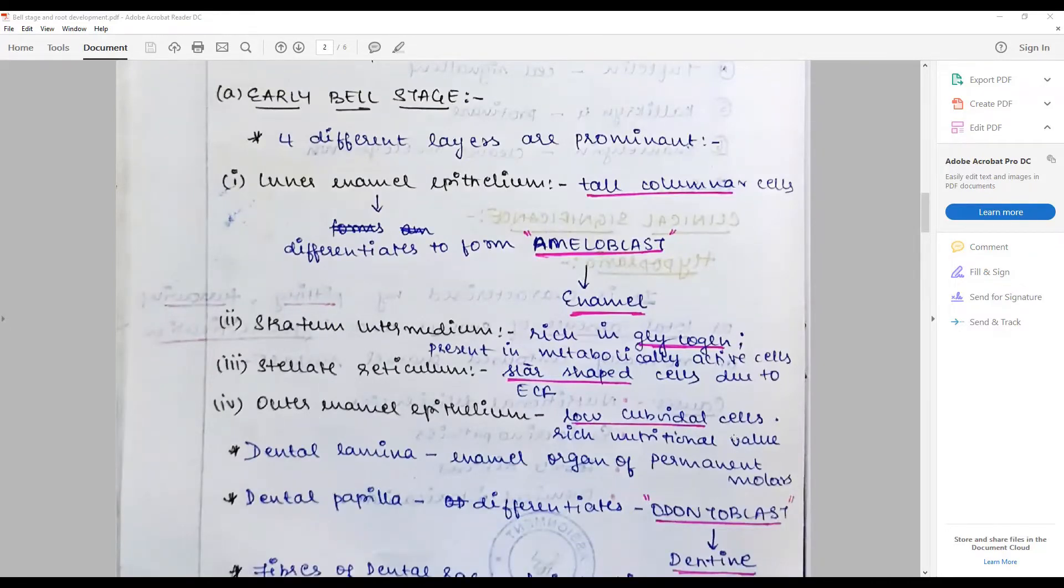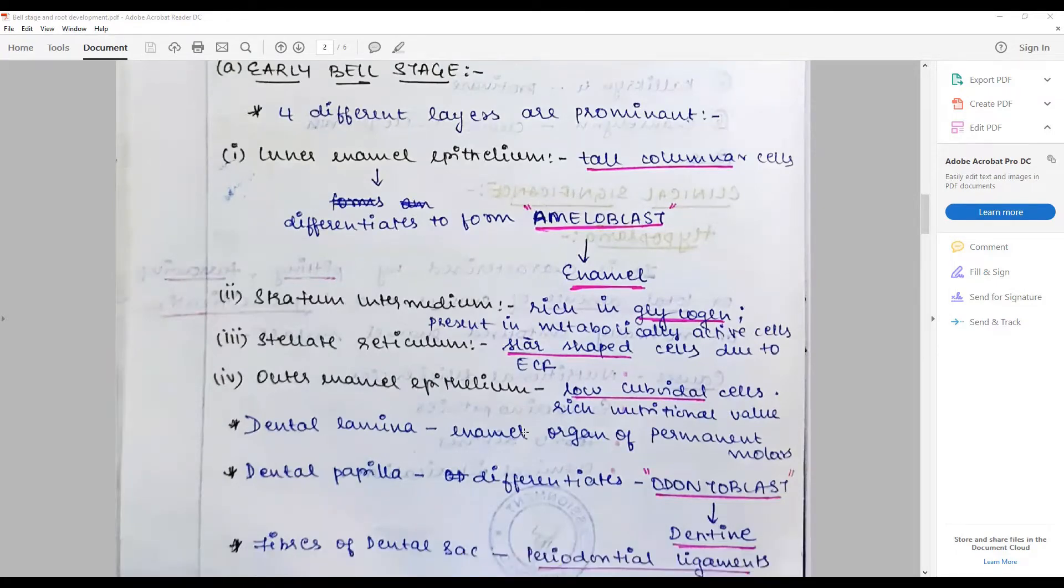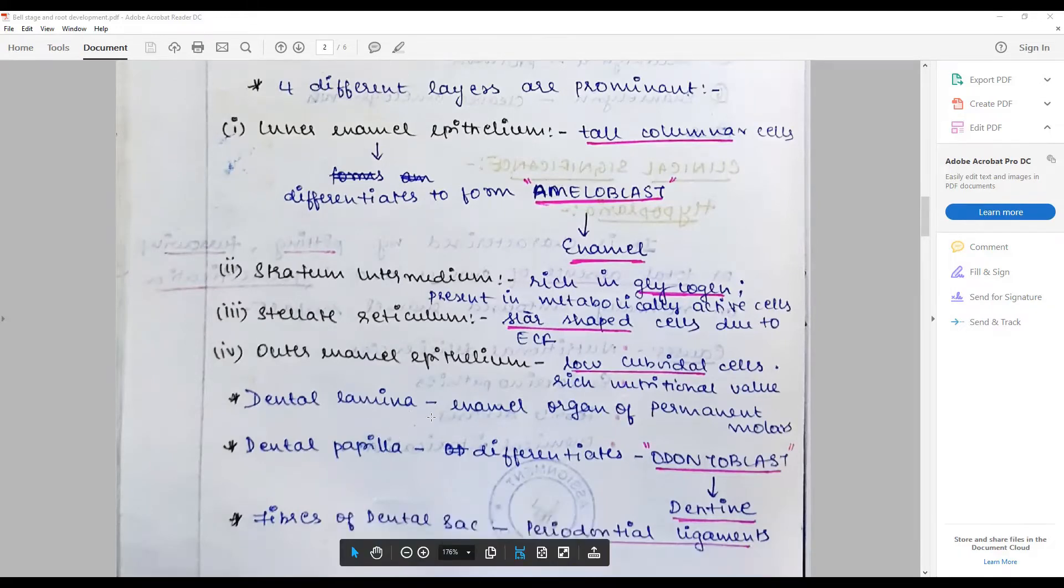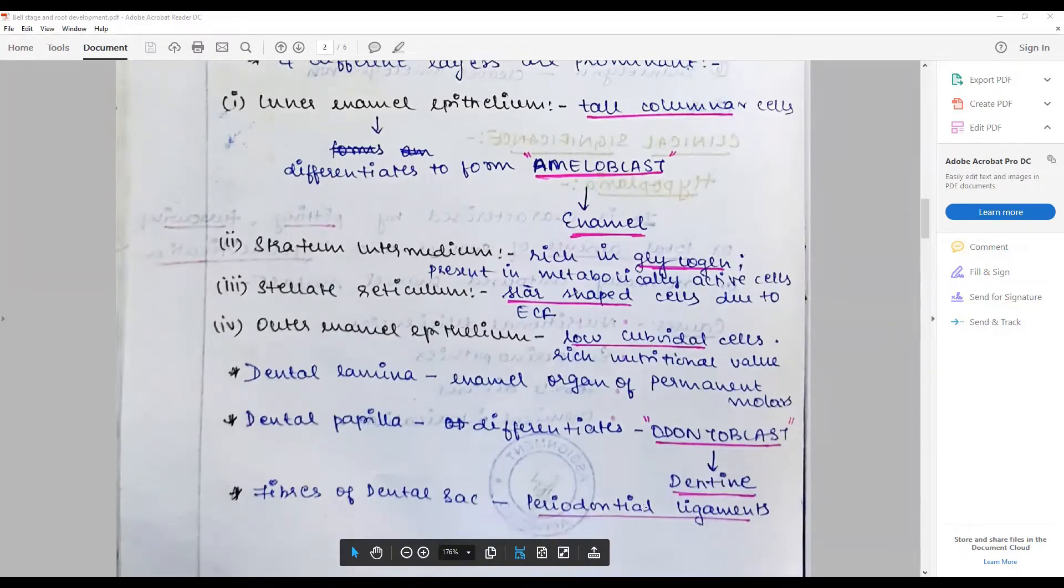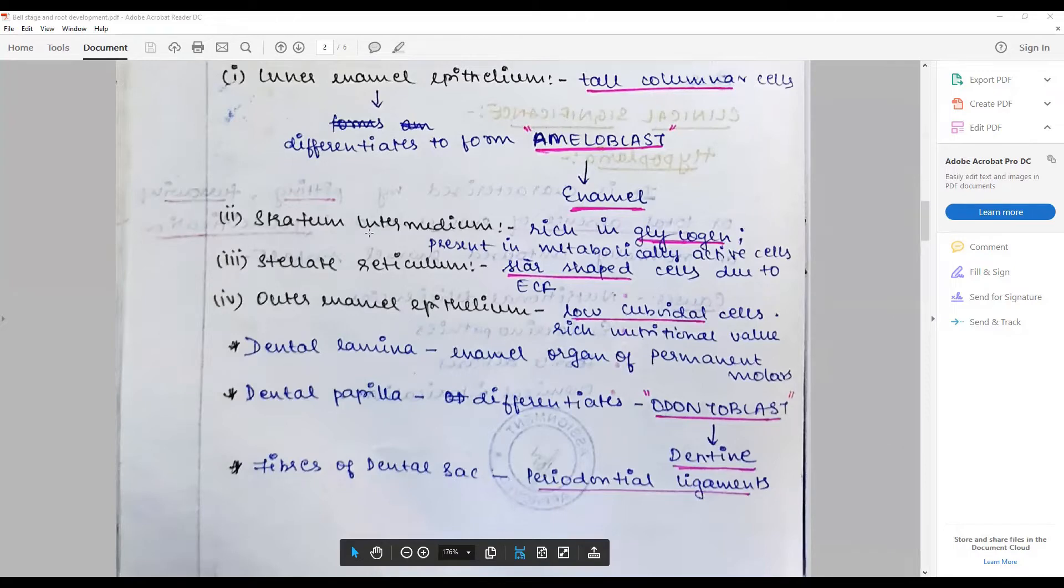So the dental lamina gives rise to the enamel organ of the permanent tooth. The dental papilla cells differentiate into odontoblasts, and the fibers of dental sac give rise to periodontal ligament. All this you have to describe.